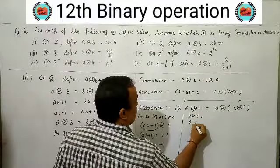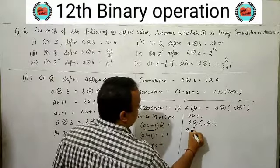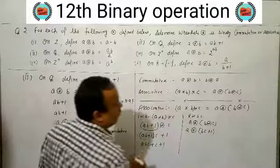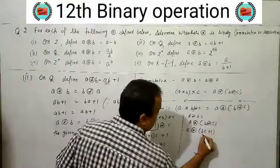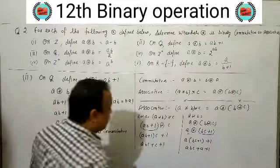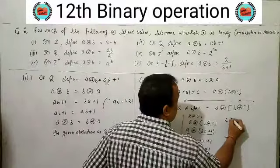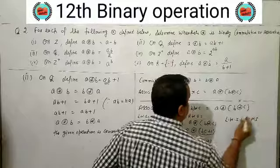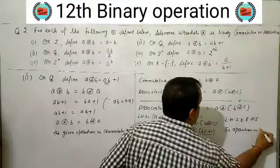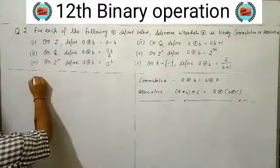Right hand side: A★(B★C). B★C = BC+1. Then A★(BC+1) = A(BC+1)+1 = ABC + A + 1. Comparing: left side is ABC+C+1 and right side is ABC+A+1. Since C ≠ A in general, left ≠ right. So operation is not associative.